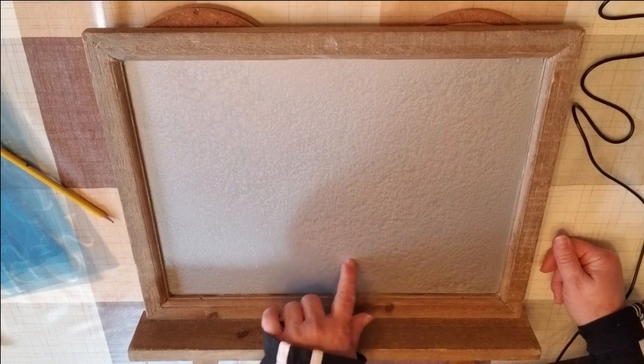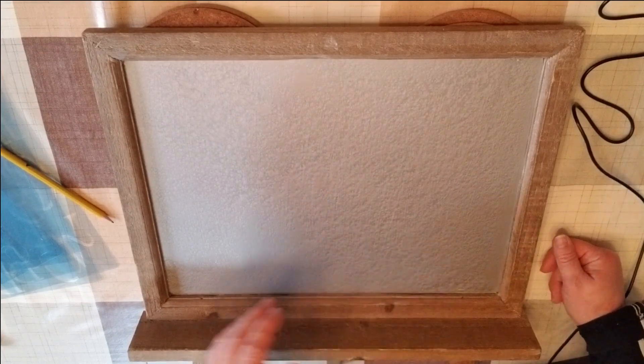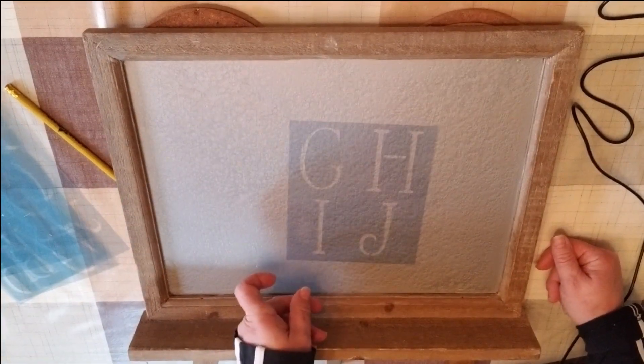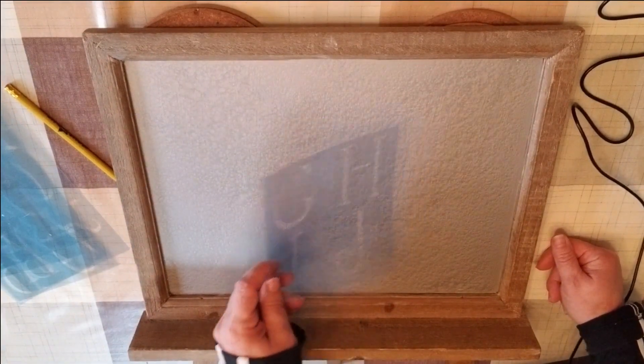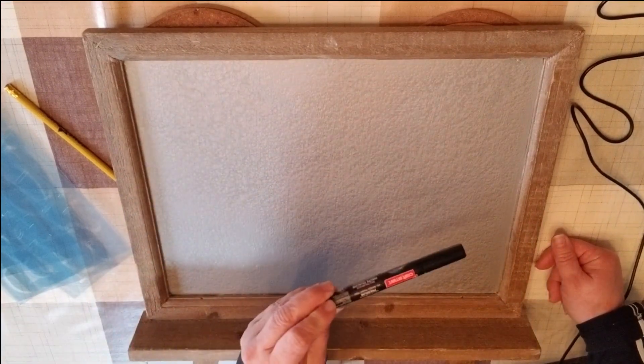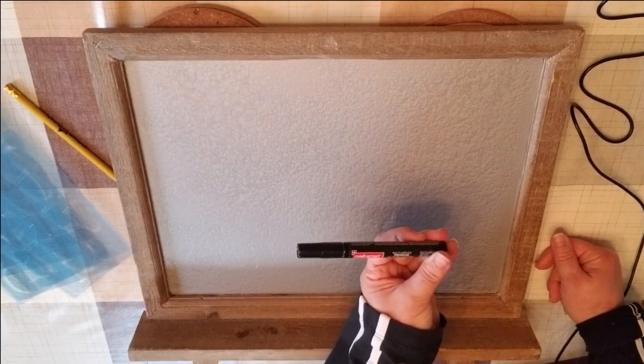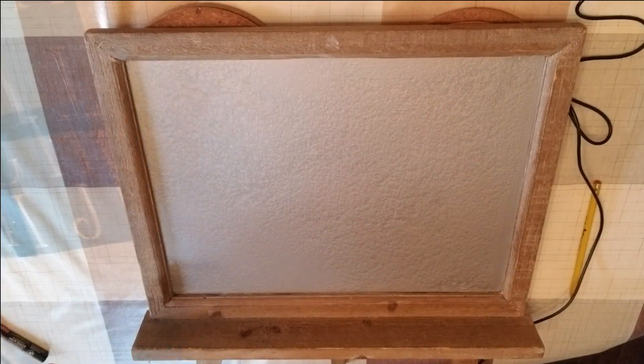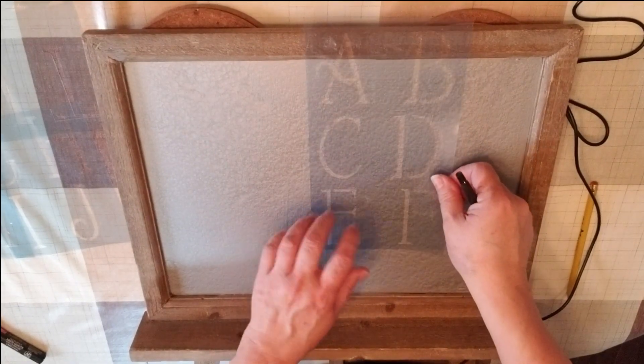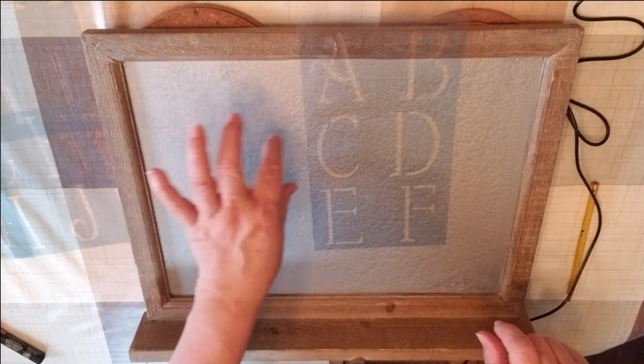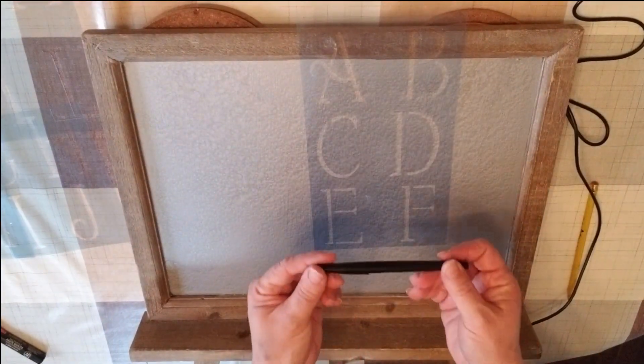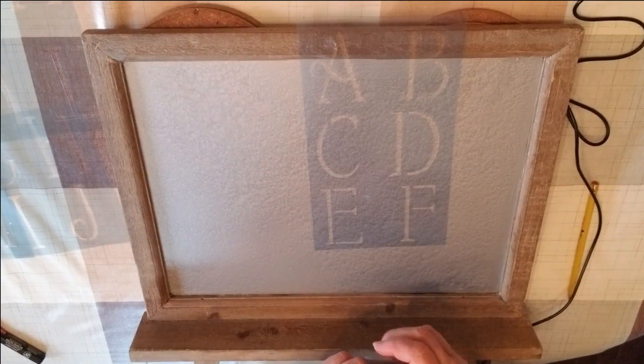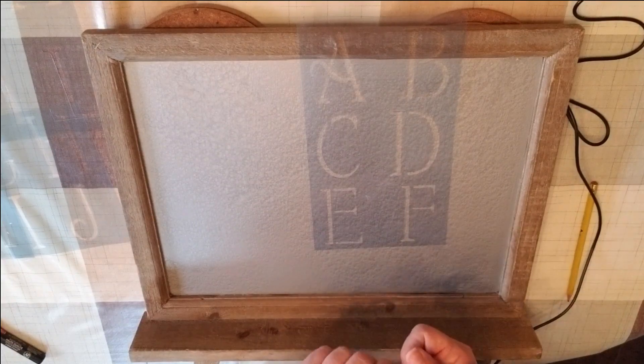So I'm going to be using my stencils, these are the letters that I really like. I'm going to be using my Craft Smart premium oil-based paint pen to put the letters on. What I'm going to be doing now is putting the stencil on and I'm going to put welcome. I'm going to use a fine tipped black regular marker because a pencil isn't going to show up on this very well and I want to be able to see the letters.